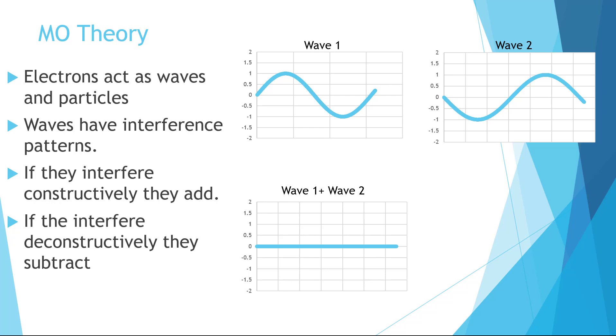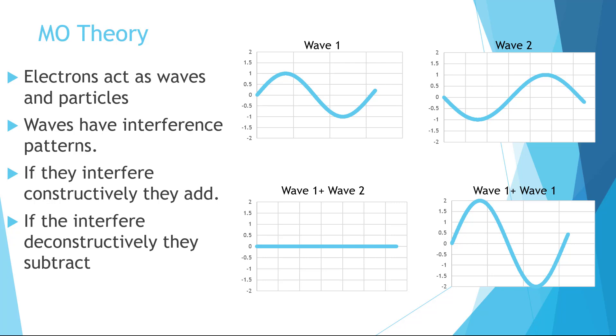Now let's look at what happens if instead we added wave 1 to another wave 1. We'd see that since they are in the same phase, they would add to each other, making a larger wave. This is constructive interference.